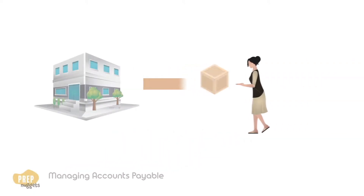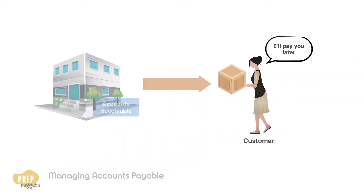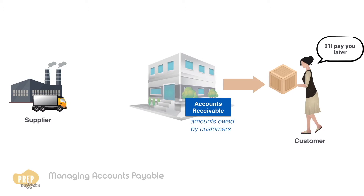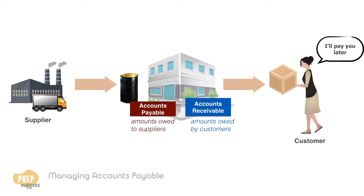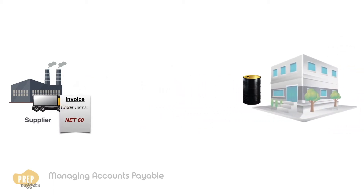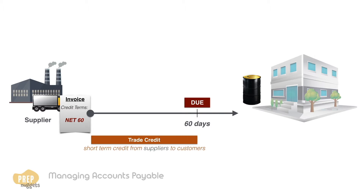We've learned earlier that accounts receivable are amounts owed by a company's customers. Companies are also customers to their suppliers, so they can also owe their suppliers payments, which we call accounts payable. A company cannot owe on its supplier payments indefinitely — for example, if the supplier extends net 60 terms, the payment is due 60 days from the invoice date. Trade credit is the term used to describe such short-term credit from suppliers to customers, and can be regarded as a form of interest-free loan.